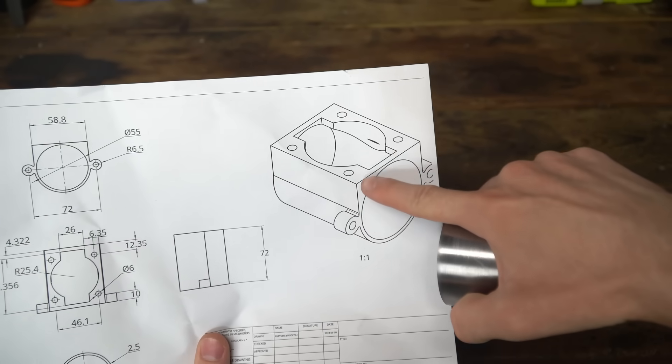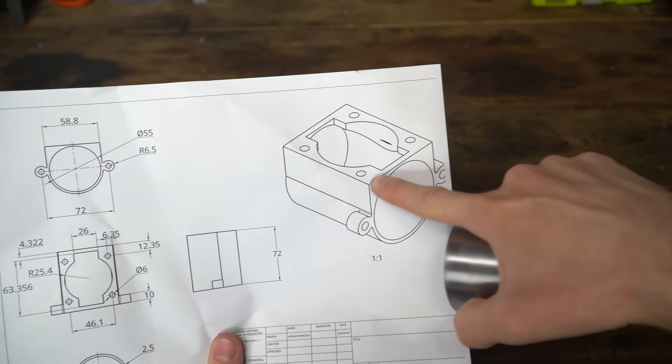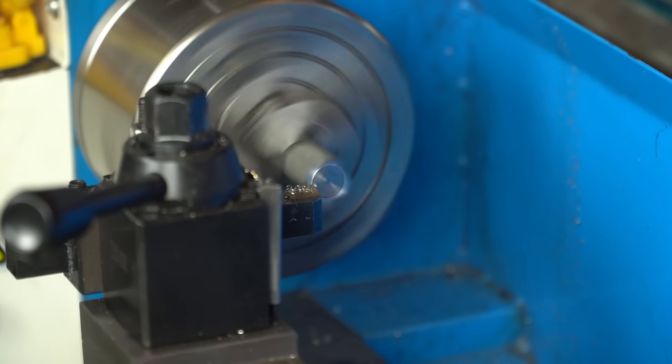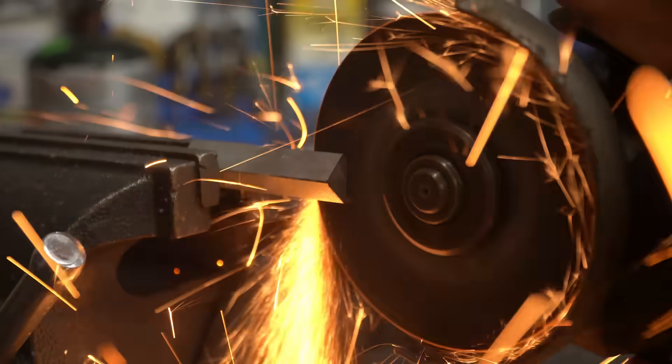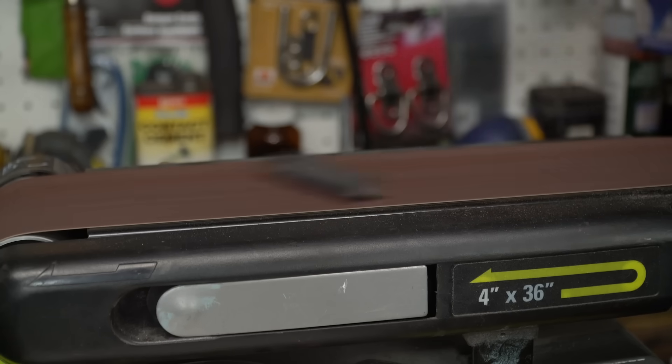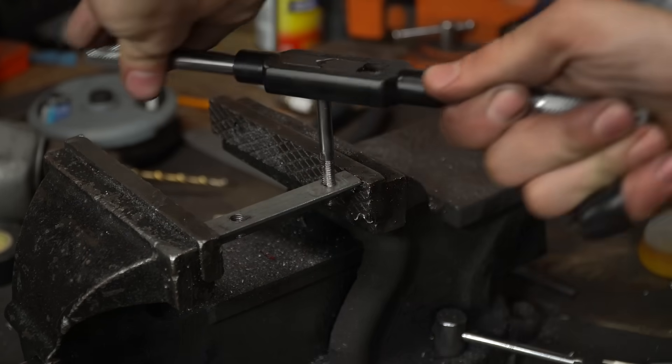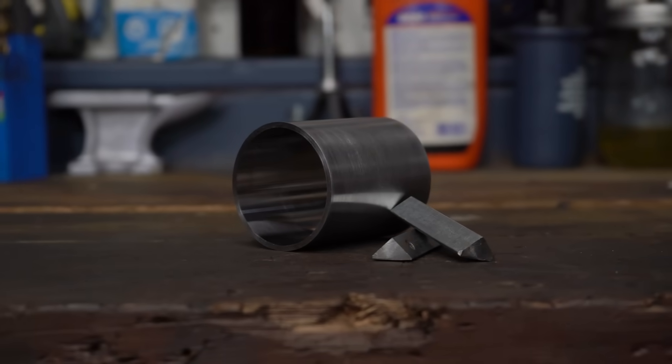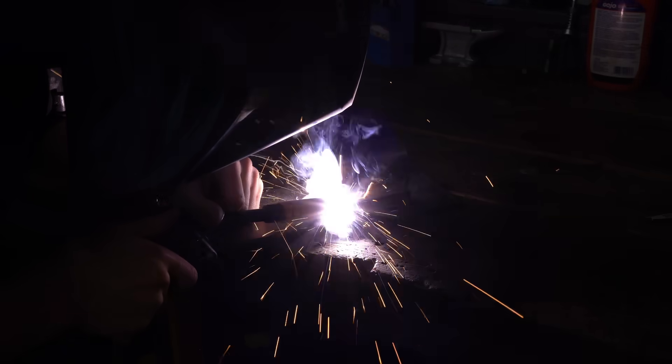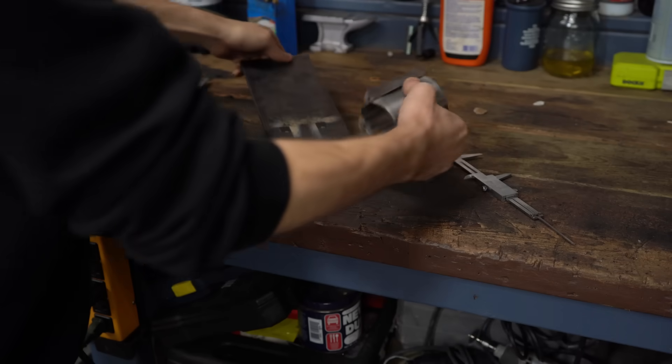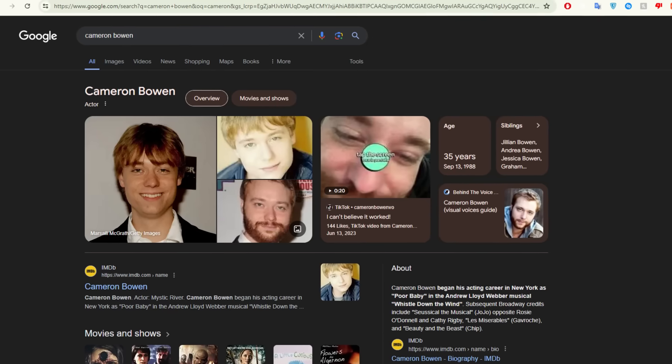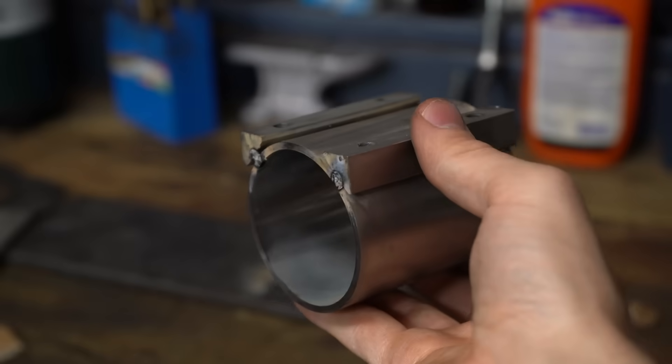So next I need to add this flat part here, which is where the cylinder will bolt onto. Once these square bars were machined down to size, I cut them lengthways to create a flat side. Then I drilled and tapped some holes. Now I just need to weld the square bits onto the top of the cylinder. But what about this giant gap? Simple. I'm just gonna keep welding over it until I've filled it in.